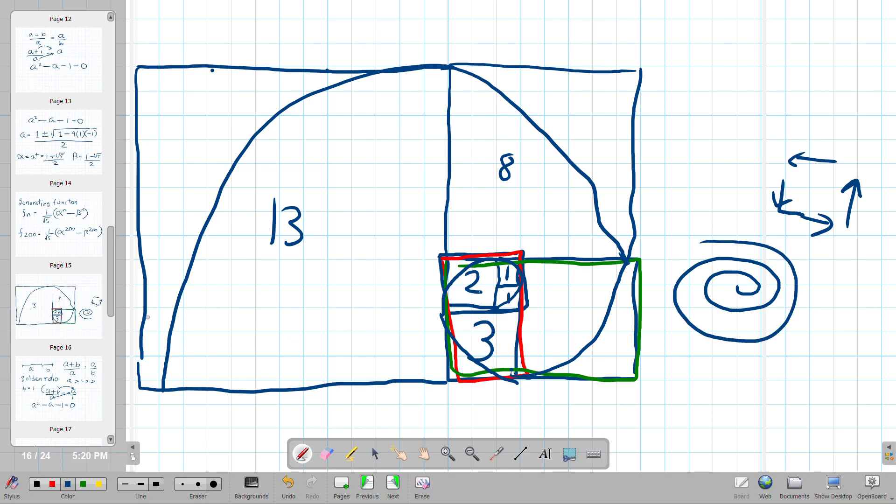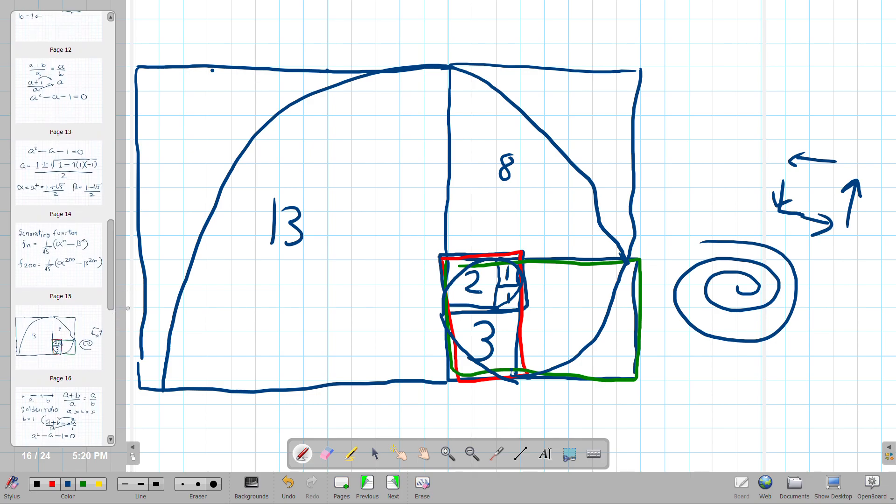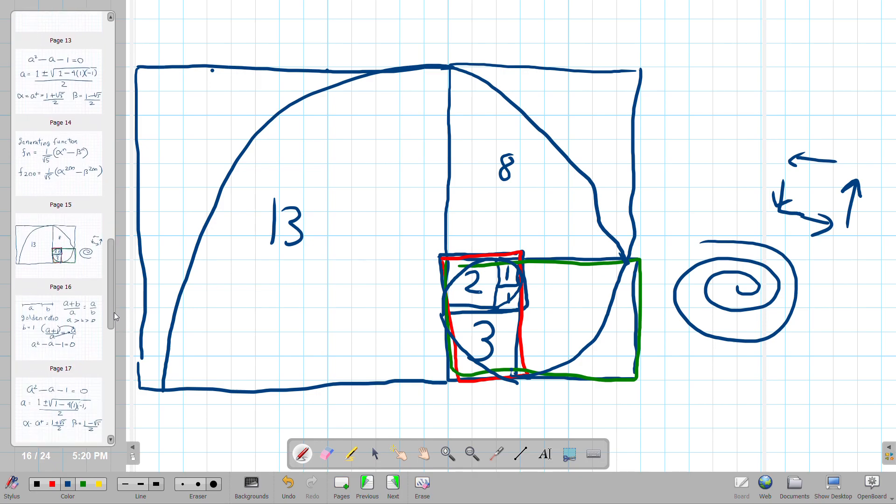All right. So that was the perfect rectangle drawn with the Fibonacci series sequence. See, I did it again. It's really a sequence. Terms.